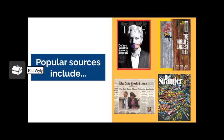You might be familiar with some of these common popular sources. Here we have magazines such as Time and National Geographic, as well as newspapers like the New York Times and The Stranger. These sources have a much quicker publication cycle and might come out daily, weekly, or even monthly for readers. Each city or geographic region might have their own selection of popular sources, such as The Stranger here in Seattle. Others, like the New York Times, might reach a larger scale of readers and provide a perspective on global issues.